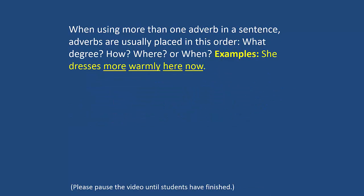When using more than one adverb in a sentence, adverbs are usually placed in this order: what degree? How? Where? Or when? Here are some examples: She dresses more warmly here now.